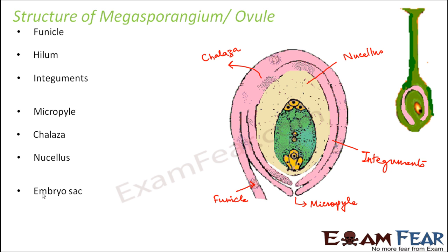The embryo sac is the female gametophyte, located within the nucellus. Inside the embryo sac are contained the important cells — the female gametes. You can actually see some cells inside the embryo sac shown in orange color. We will discuss them very soon, but first let us go through each part of the ovule in detail.